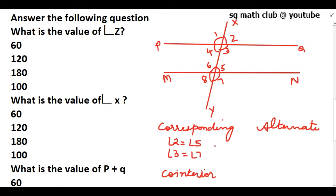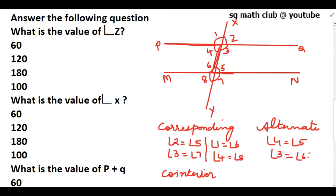Angle 3 and angle 7 are a pair of corresponding angles. Angle 1 and angle 6 are another pair, and angle 4 and angle 8 are another pair of corresponding angles. Alternate interior angles — the corners of the Z-shape form alternate interior angles: angle 4 equals angle 5, and angle 3 equals angle 6. Co-interior angles on the same side of the transversal are angle 4 plus angle 6. These two are co-interior angles and they form a supplementary pair, so their sum is 180 degrees. Also angle 3 plus angle 5 equals 180 degrees.